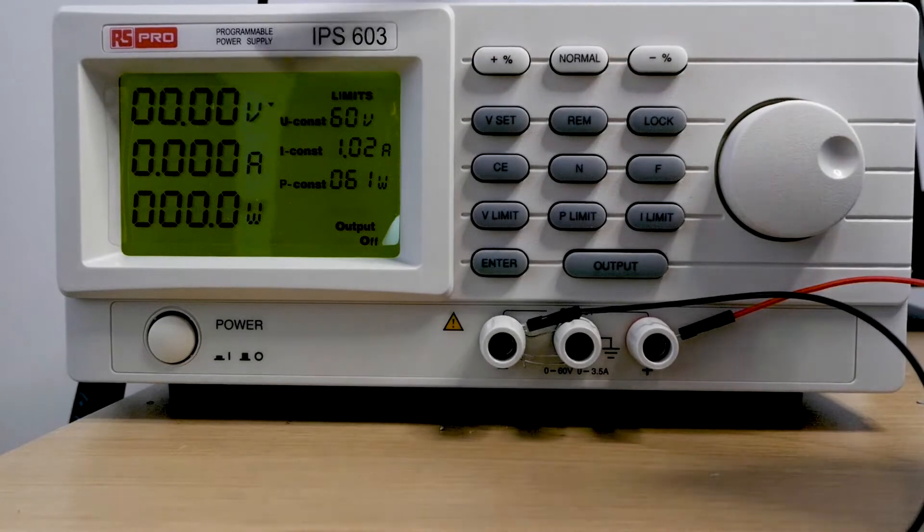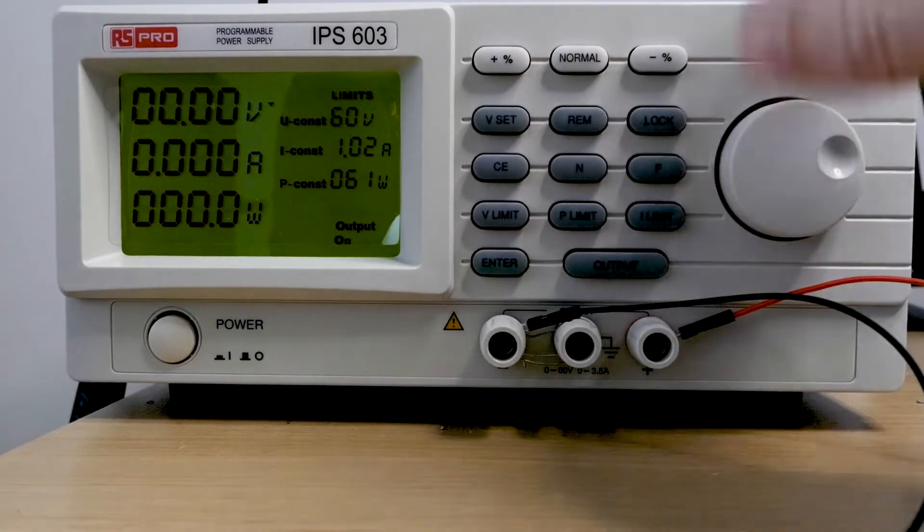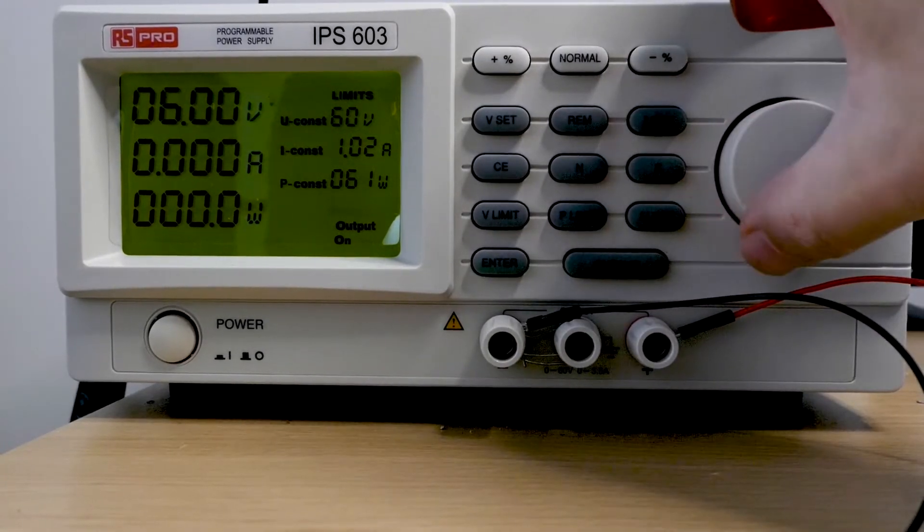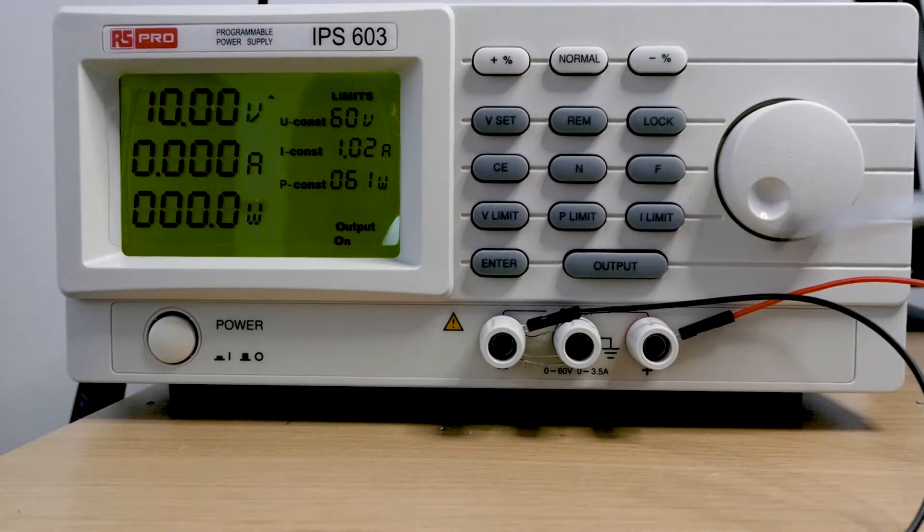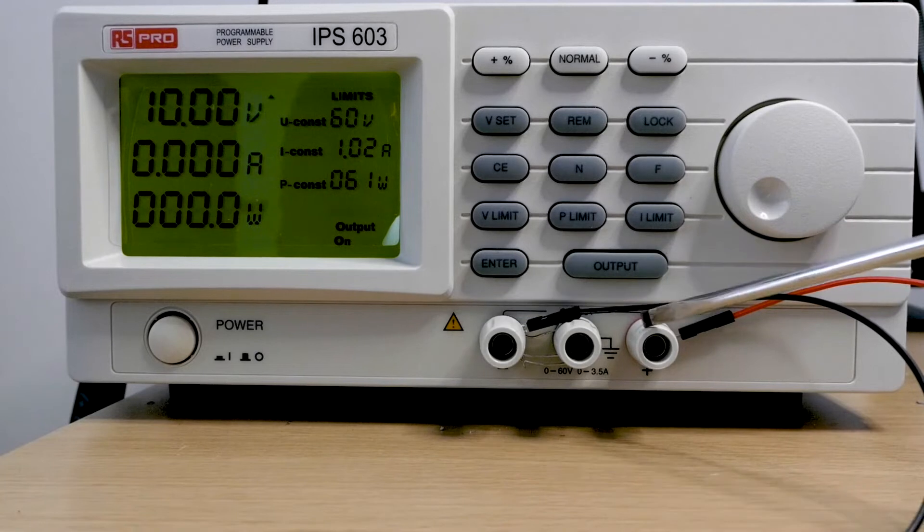At the moment we're set at zero volts. I can enable the output, I can increase the voltage. Let's put it at 10 volts. Now if I took a multimeter and I looked between this terminal and this terminal I'd measure 10 volts.